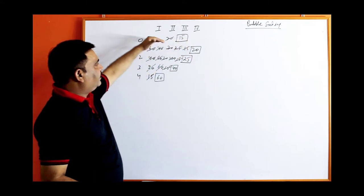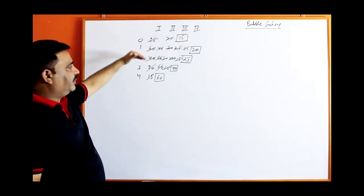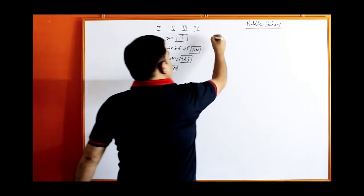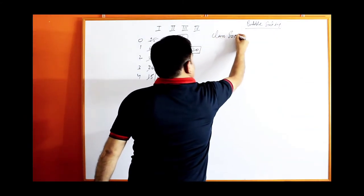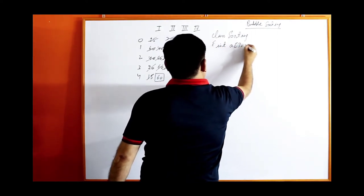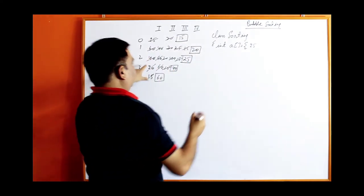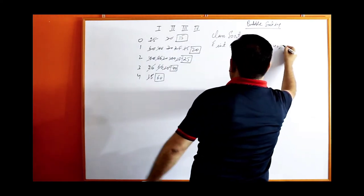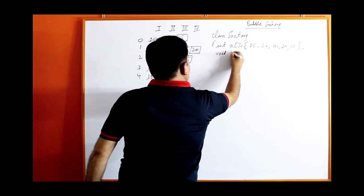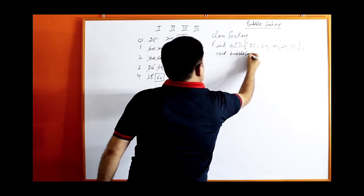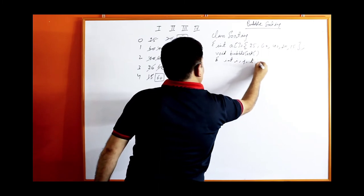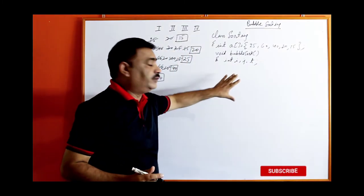So four times we have repeated the process of comparison and swapping. Now we have to make the program for it. I am making one class called Sorting and taking some values: array A equal to 25, 60, 40, 20, and 15. And making one function void bubbleSort. Taking two variables I and J, and one more variable T for swapping. I and J are for the loops, because we have to make a nested loop.